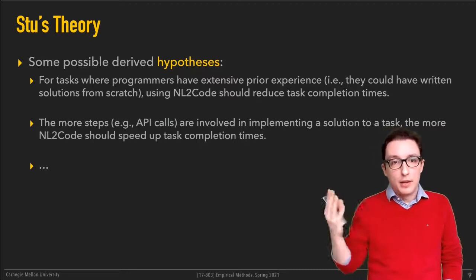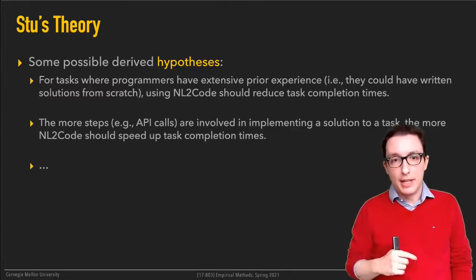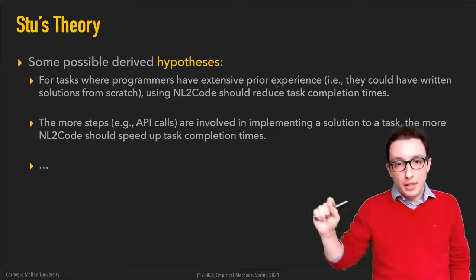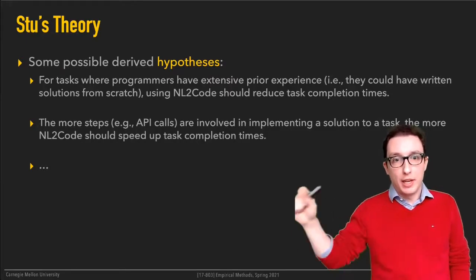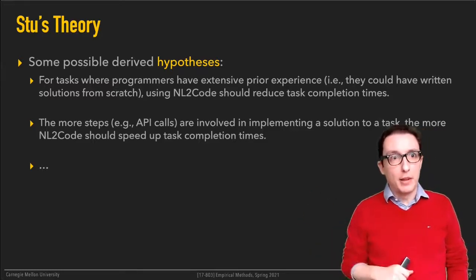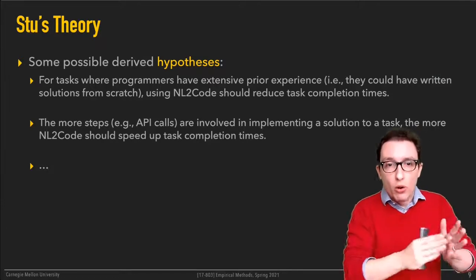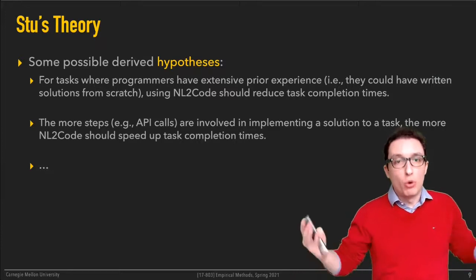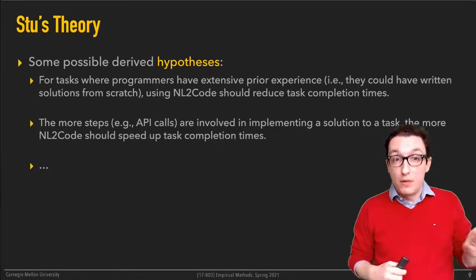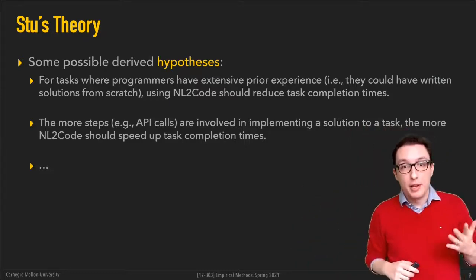Another hypothesis: the more steps or API calls involved in implementing a solution to a task, the more NL2Code should speed up task completion times — because these are exactly the kinds of things where you could get stuff for free, things you maybe don't remember. It would be beneficial to get them offered automatically without having to look them up, and the more of them you have to use, the more benefit you can expect.